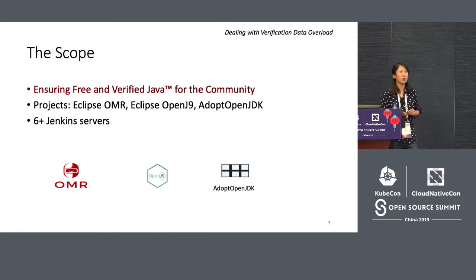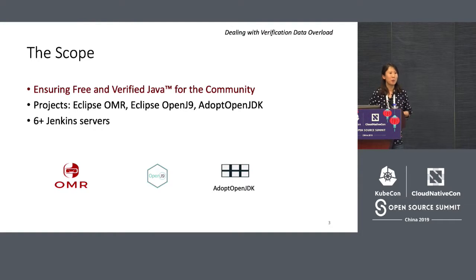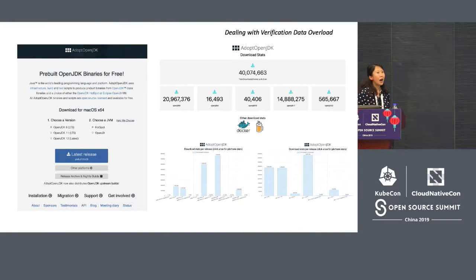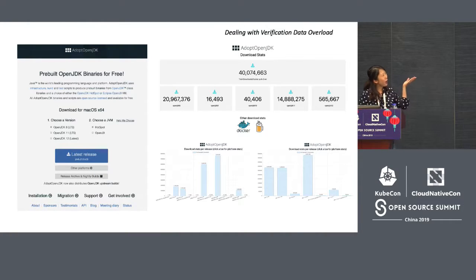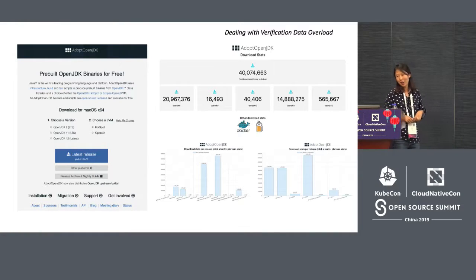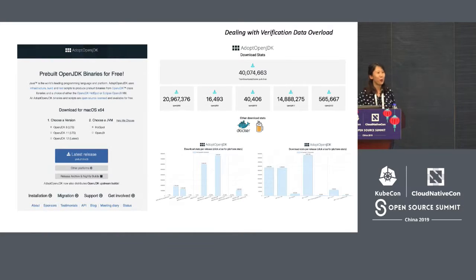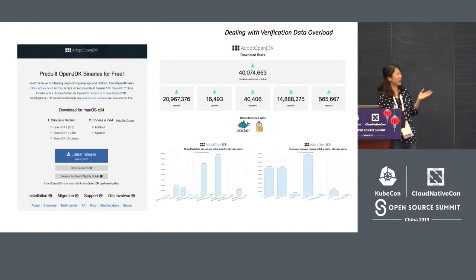我們一共有六個Jenkins服務器，Jenkins就是我們自動化的編譯版本。對於OpenJDK的二進制文件，也可以從AdoptOpenJDK下載。到今天為止，我們已經有四百萬次的下載，這對我們也有些壓力，因為我們要確保我們產品的質量。